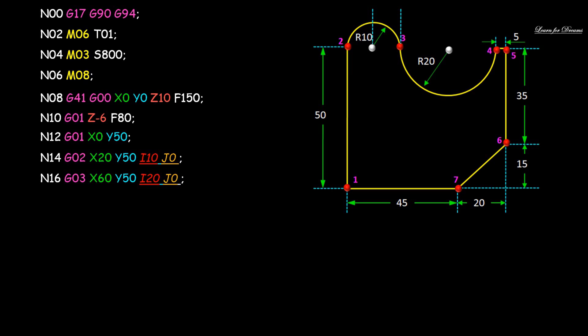Listen carefully: when going from point 2 to point 3, you need to define the coordinates for point 3 with respect to the center point of the circle. Point 3 is 10 mm from the center point in the X direction, hence the I value is 10 mm. The Y coordinate is not changing, hence the J value is 0.